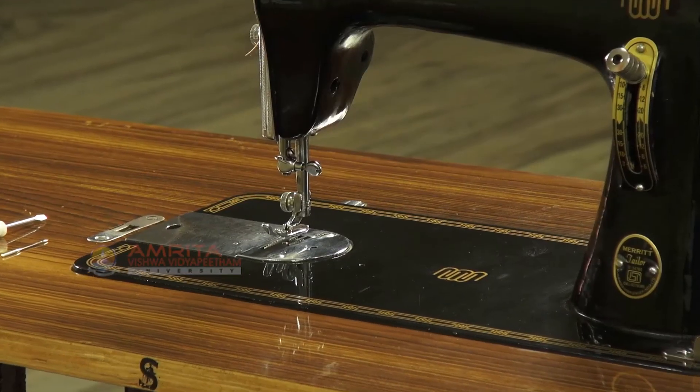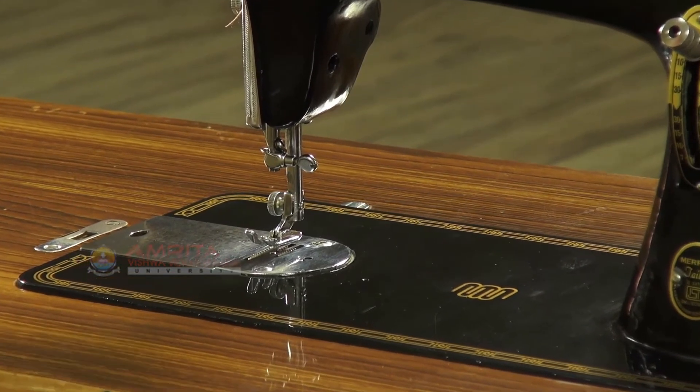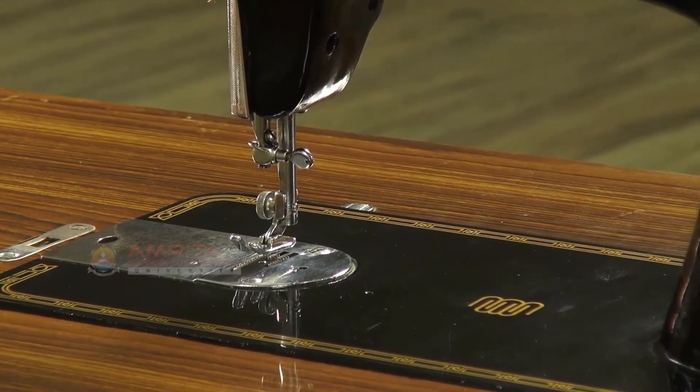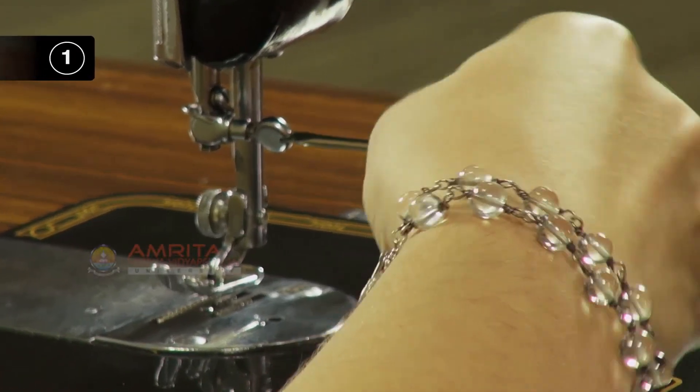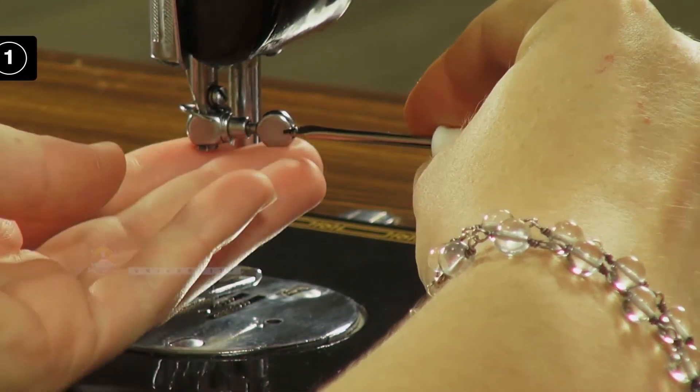Now let's watch how to install a needle into a sewing machine. Step 1: First of all, loosen the needle clamp screw with a screwdriver.